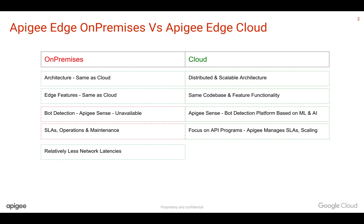On-premises, you will have lower network latencies because Apigee Edge is installed closer to your backend services. In cloud, relatively, you will have a little bit more network latency — we're talking about one or two milliseconds because of the cloud upstream and downstream network link to your data center. But if your backend workloads are also running on the cloud, then it's negligible.